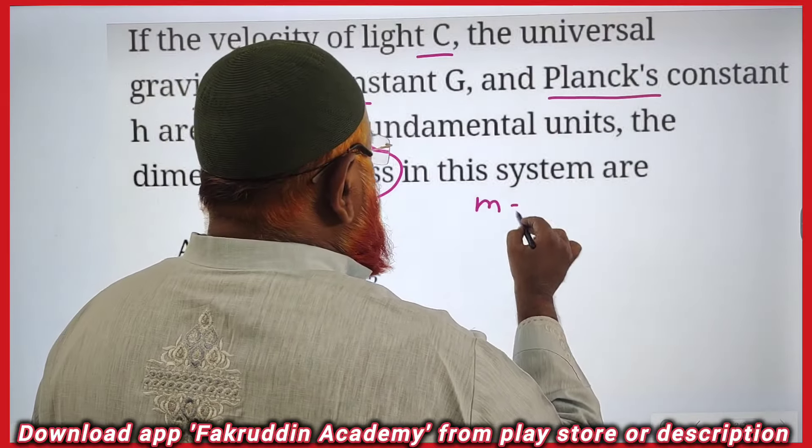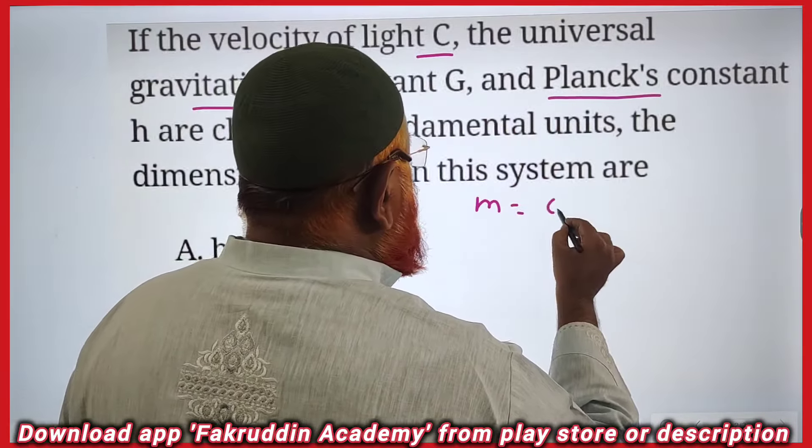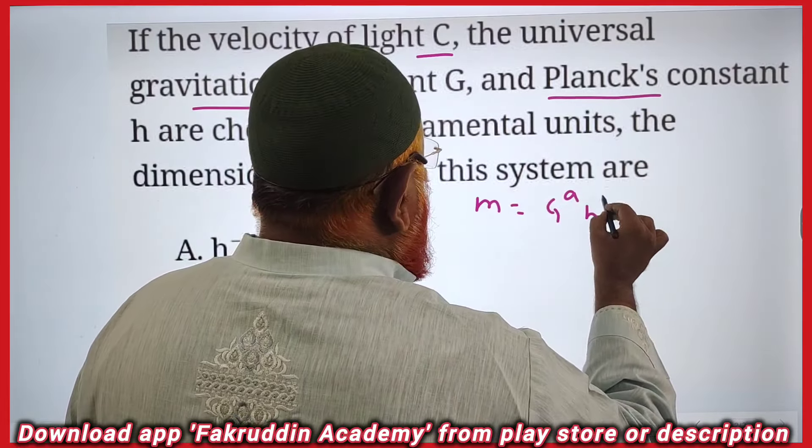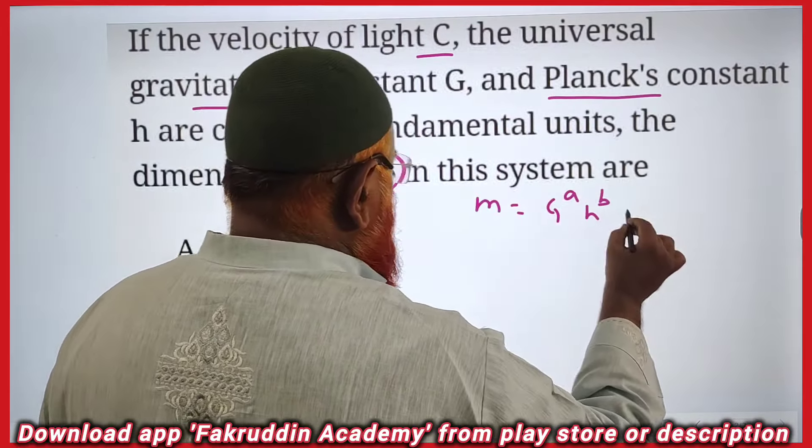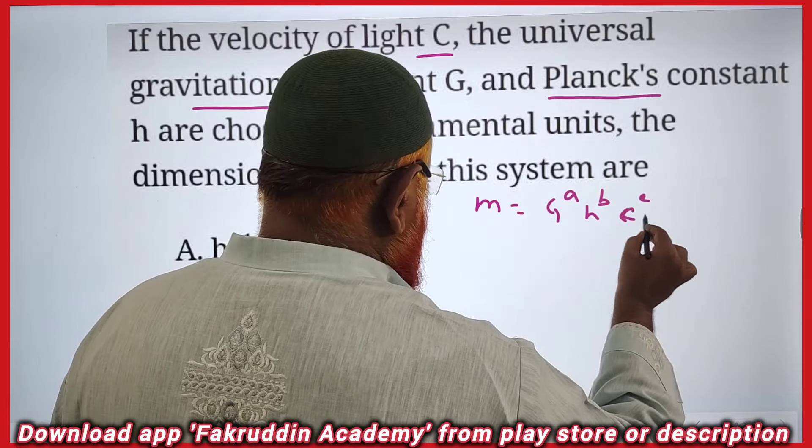That means mass is equal to, what are the things you have to consider? Gravitation constant G power a and Planck's constant h power b and velocity of light c power c you can take. Velocity of light is taken as c.